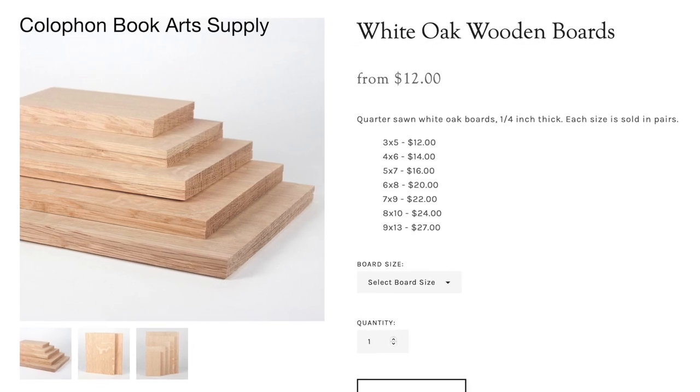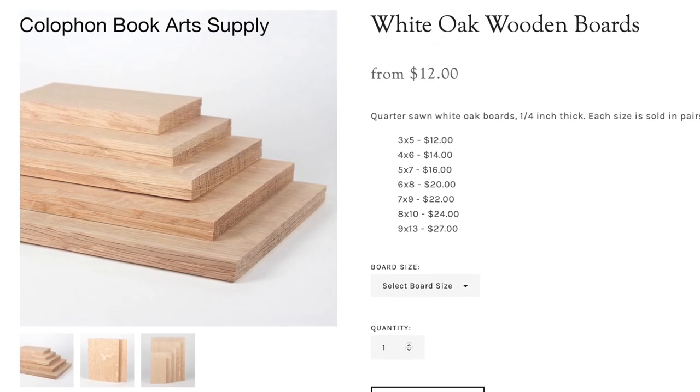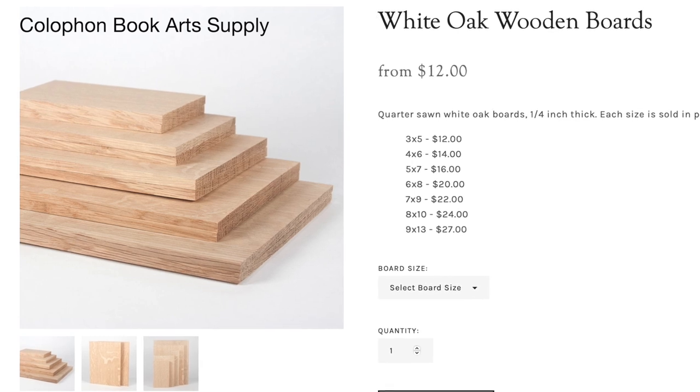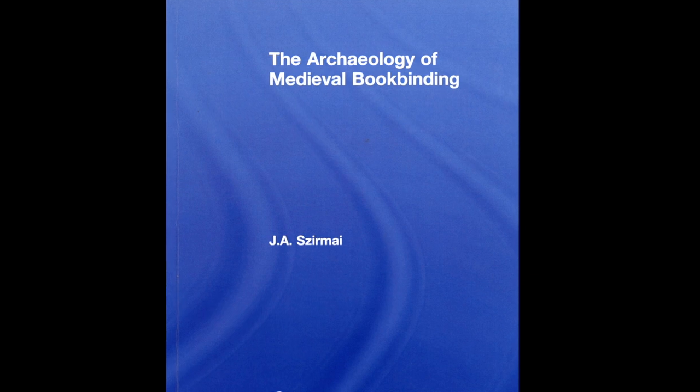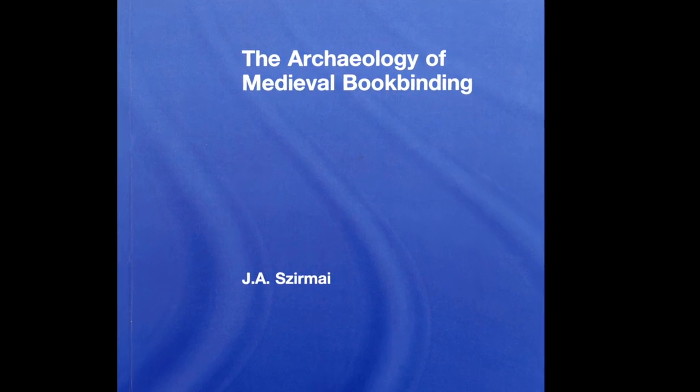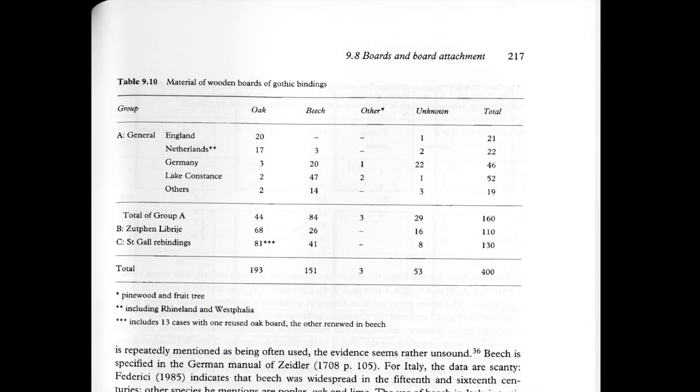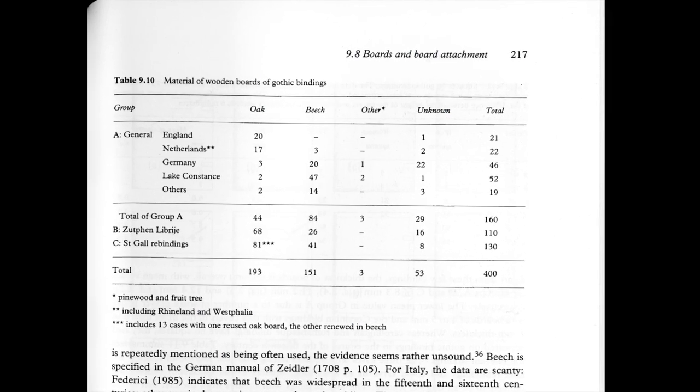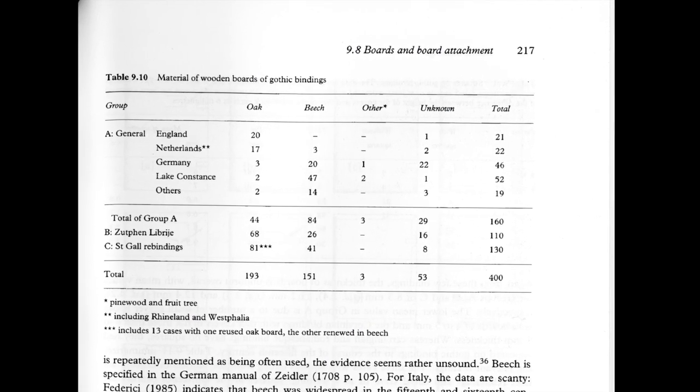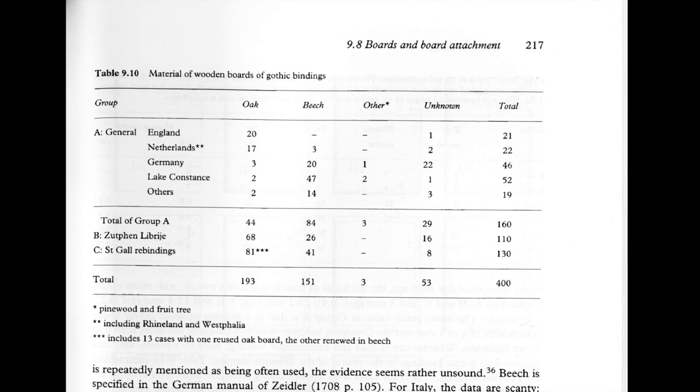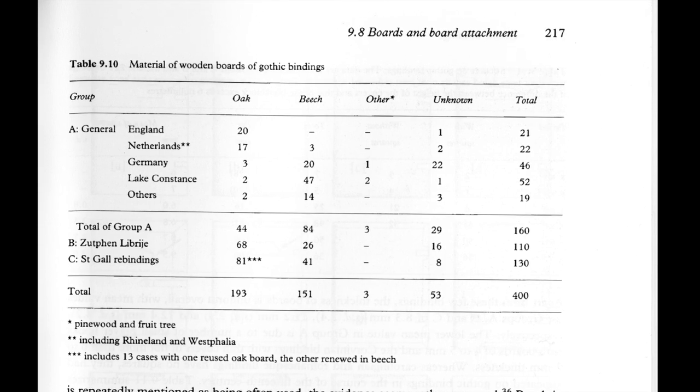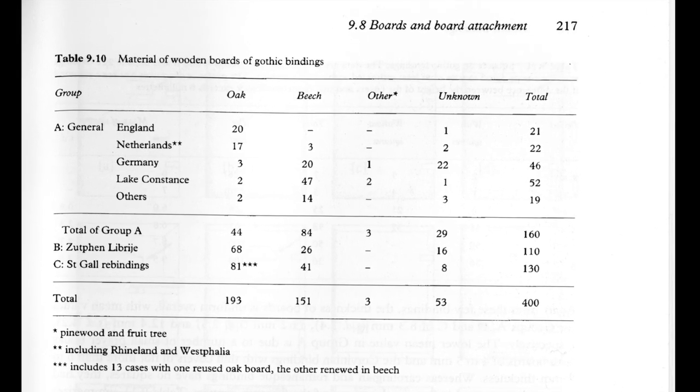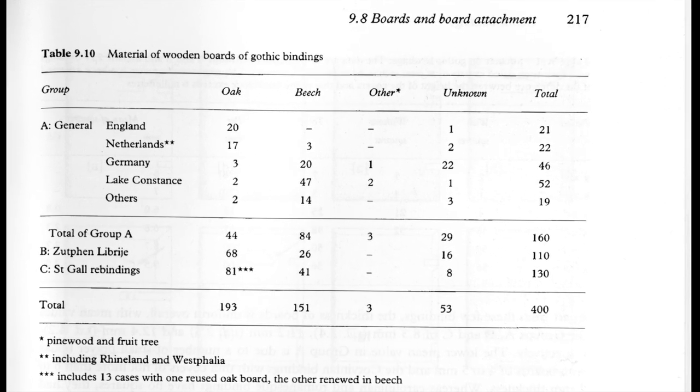But in North Africa, some types of acacia were used. All over the world, different woods would have been used. For medieval books, Zermai is the book to consult. For instance, in Zermai, he has a table of types of wood versus location for Gothic bindings. Of 400 bindings surveyed, 193 were oak, 151 were beech, 3 were pine wood or fruit trees, and 53 were unidentified.